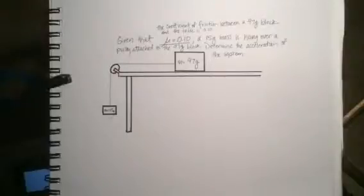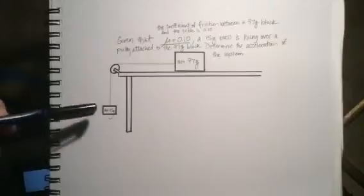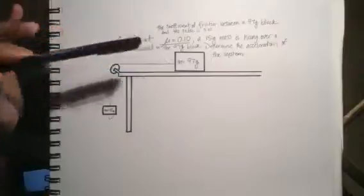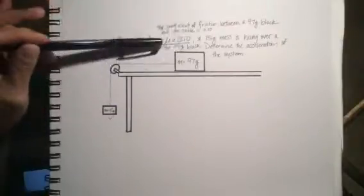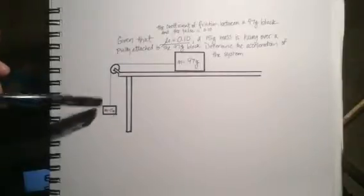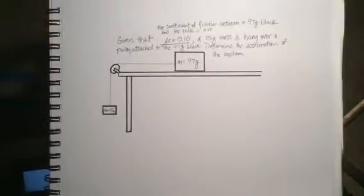Let's consider a block hanging on what I call a Newton's second law apparatus. Given that the coefficient of friction between the 97 gram block and the table is 0.1, a 15 gram mass is hung over a pulley attached to the 97 gram block. Determine the acceleration of the system.